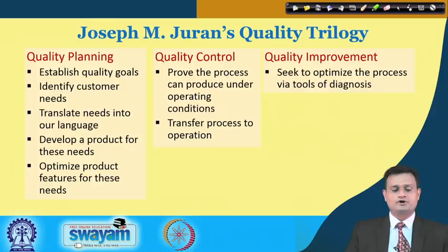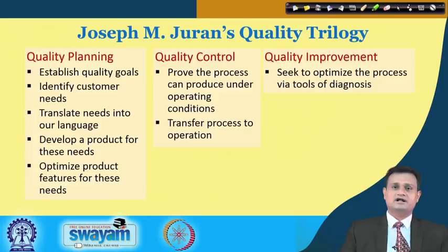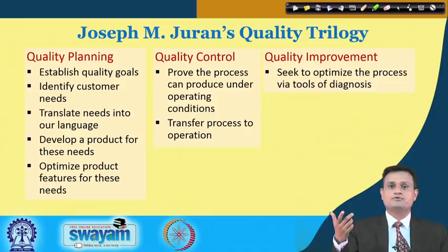Quality control involves proving the process can produce under operating conditions, transferring the process to operations, and establishing stringent control over variability. Quality improvement seeks to optimize the process via tools of diagnosis — it is not enough to just control the process; you also need to optimize the parameters and see that quality improvement really takes place at its best.